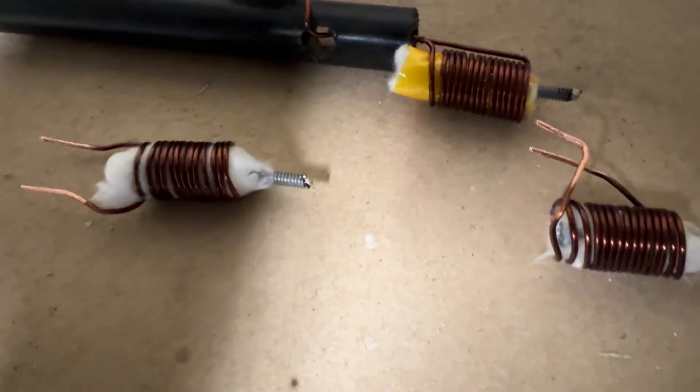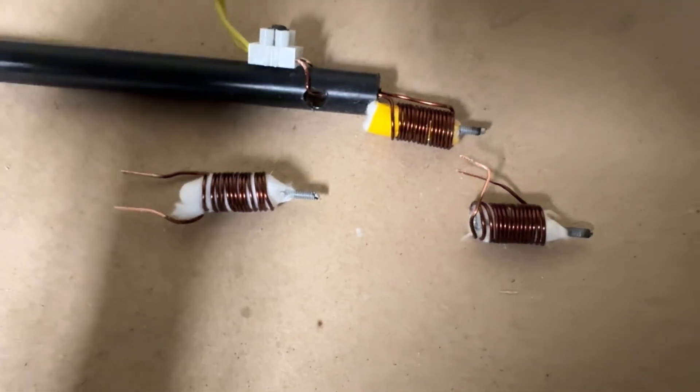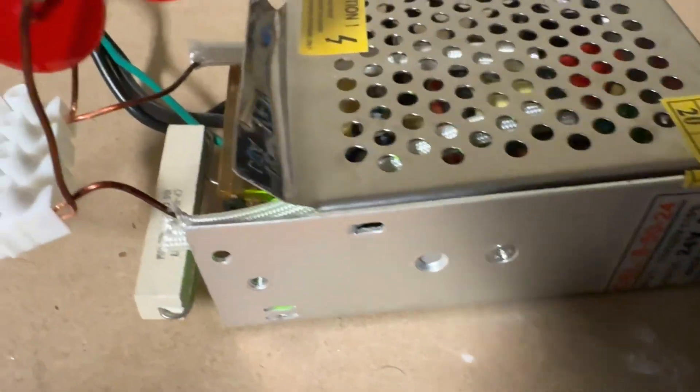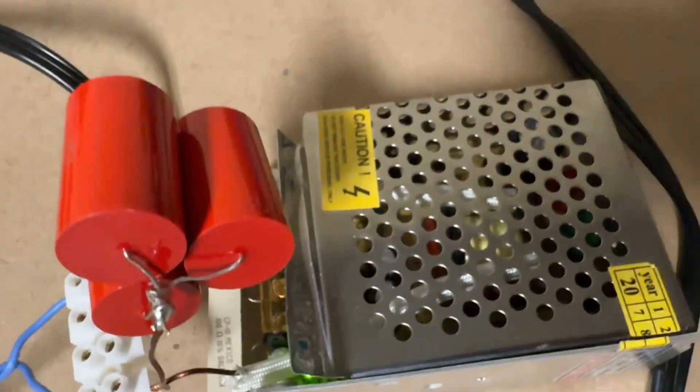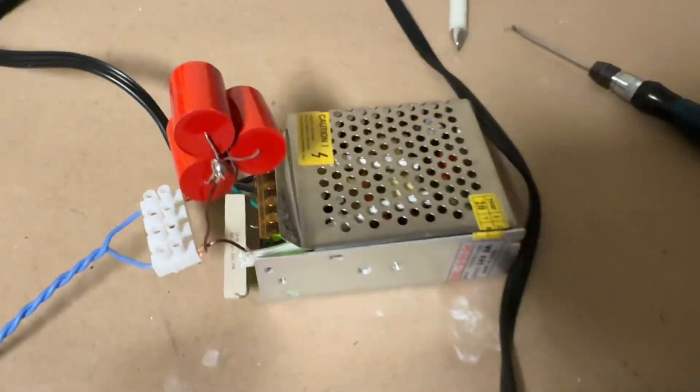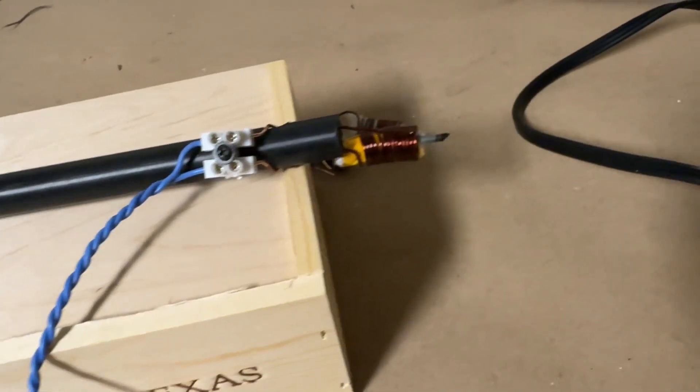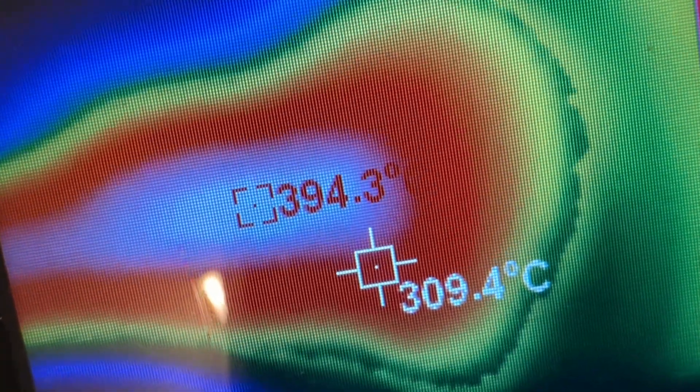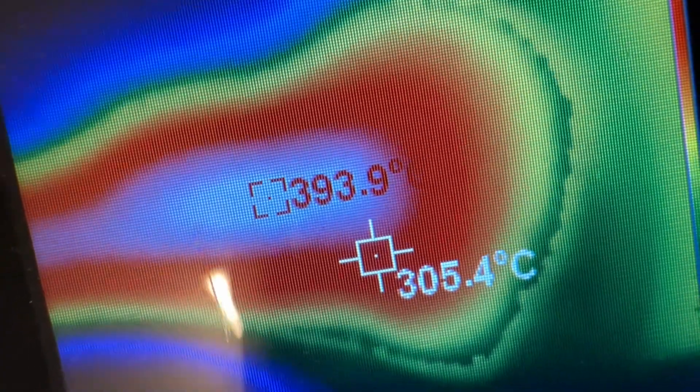Now here's some other test cores that I made. I found that 15 turns works best in this setup. The wire pair connecting the resonant capacitors and the soldering iron can be fairly long and it works still just as well. Here's a quick thermal analysis of the soldering tip. It heats up really fast.